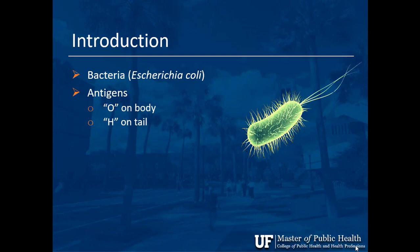Antigens are basically like name tags on a cell — antigen markers, proteins, carbohydrates on the body. We call those the O antigens, and on the tail we call those the H antigens. The cylindrical body shape looks like an O, and the H is on the tail.